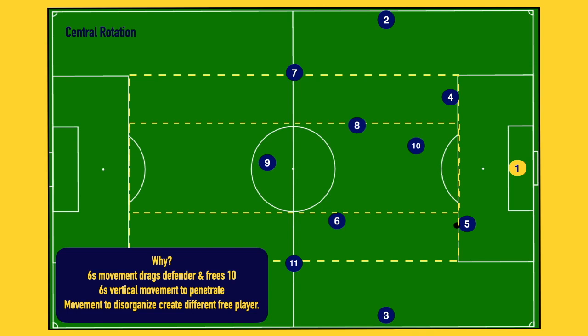Sometimes that six's vertical movement can be found with a forward pass. This often happens against man marking players, but also in zonal systems where they lose track and are trying to figure out who picks up what. And finally, does this movement create other free players? Especially in man marking situations, is there a passing lane to find the nine, or does the eleven suddenly become free based on the six's movement? All those things are a consequence of the rotation.